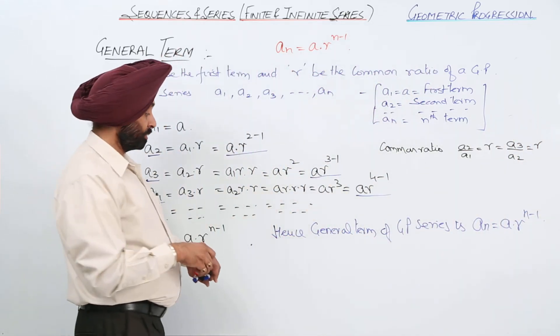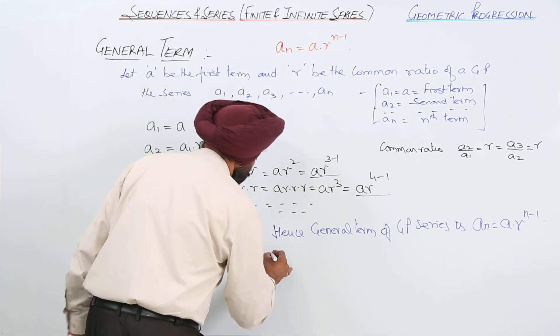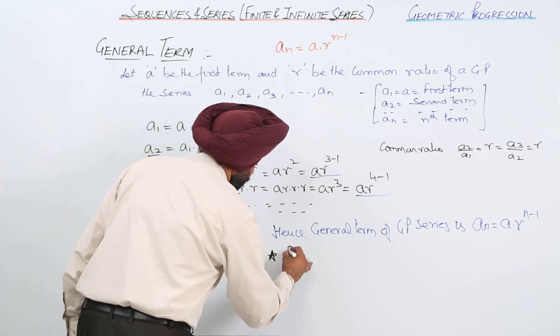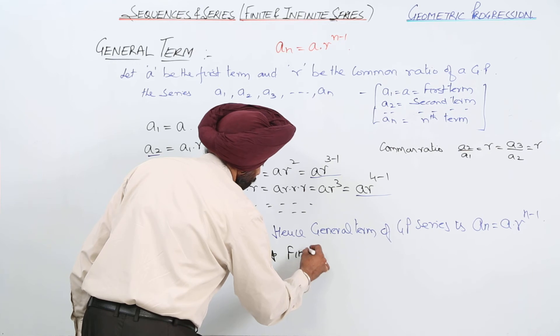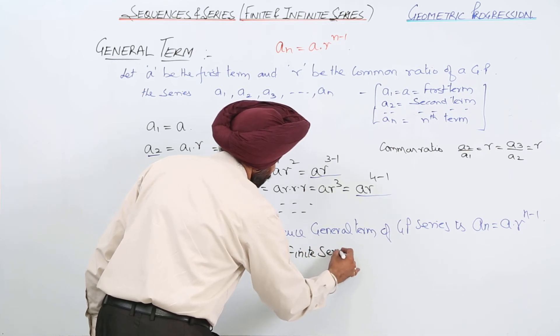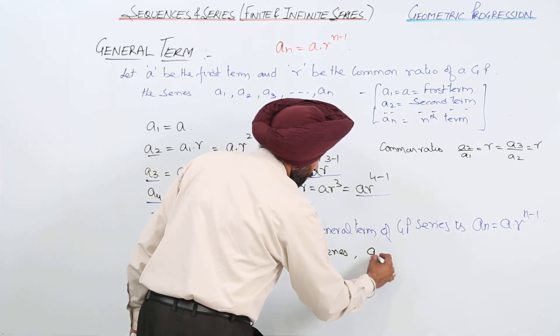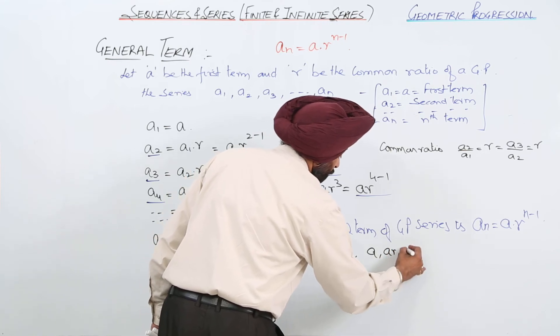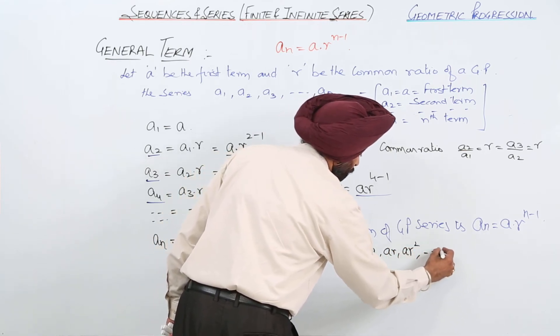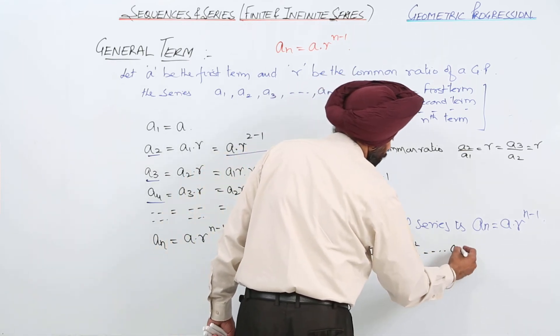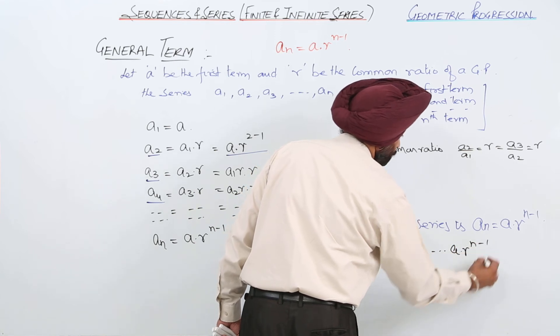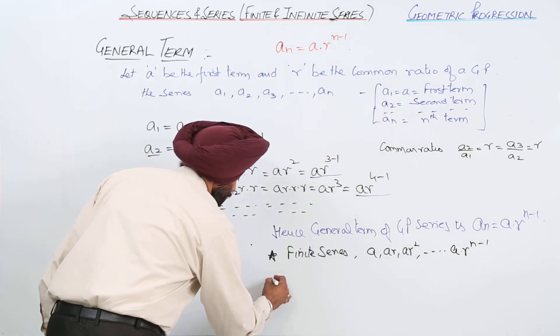Now here two conditions arise. Number 1: Finite series. Finite series can be written as a, ar, ar square, like this ar raised to n minus 1. Infinite series.